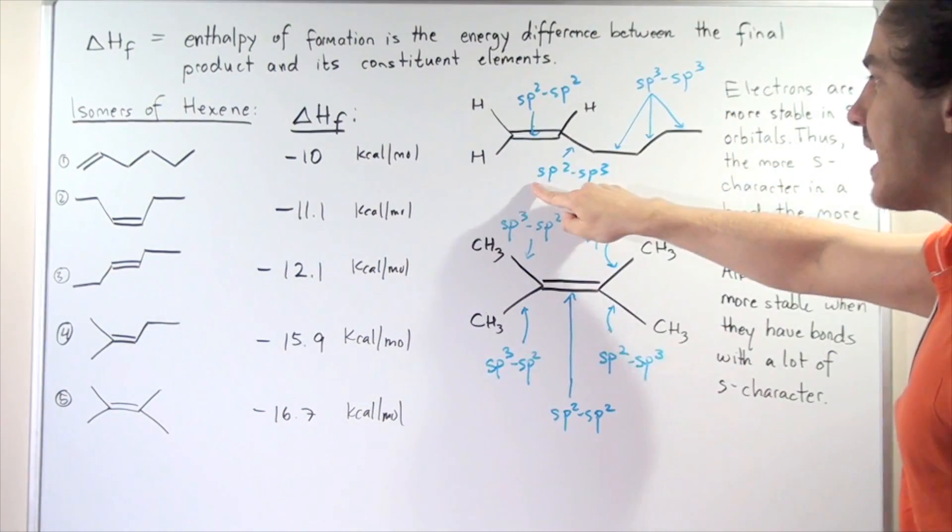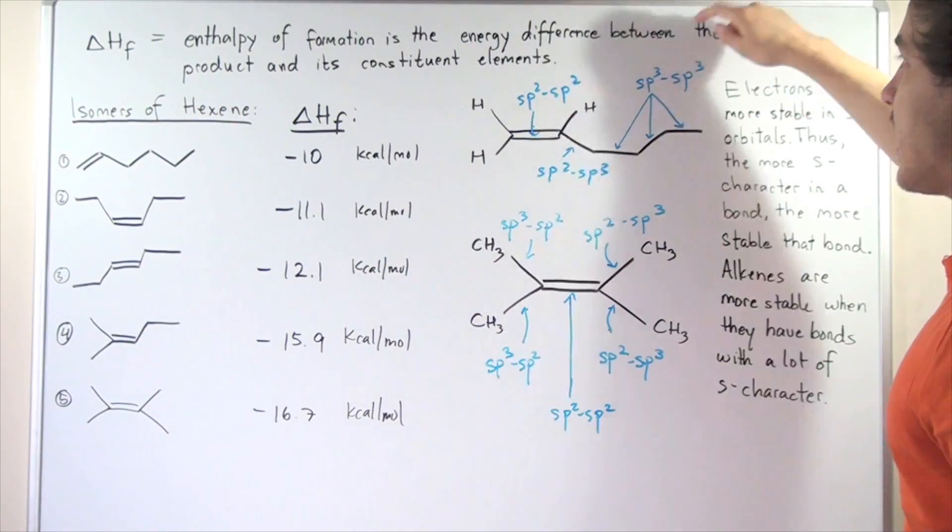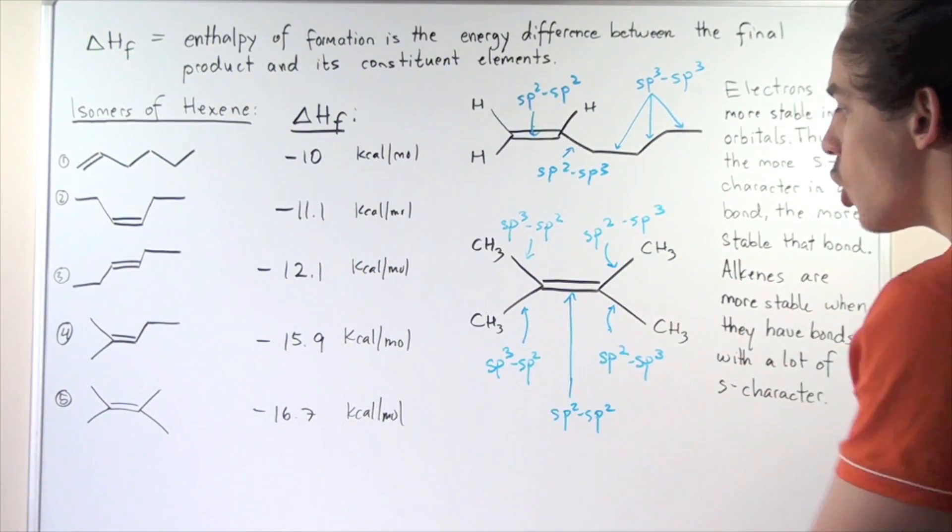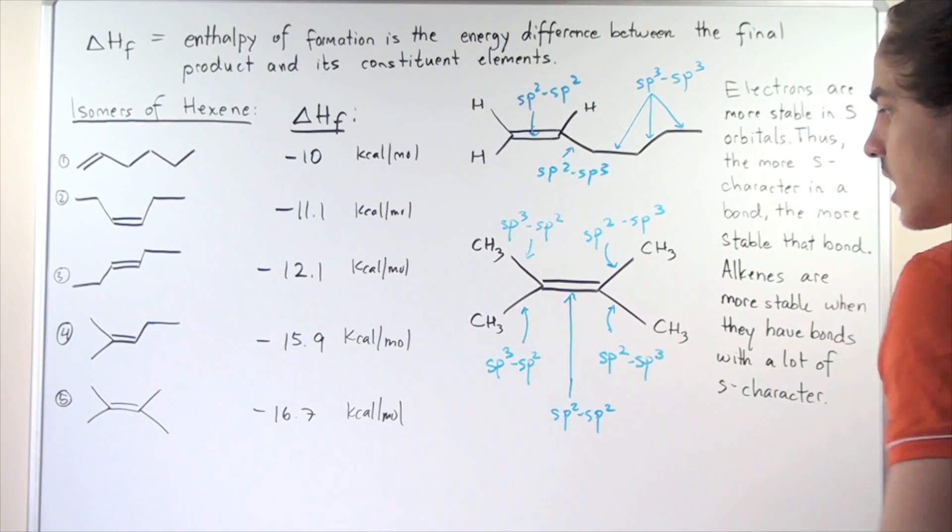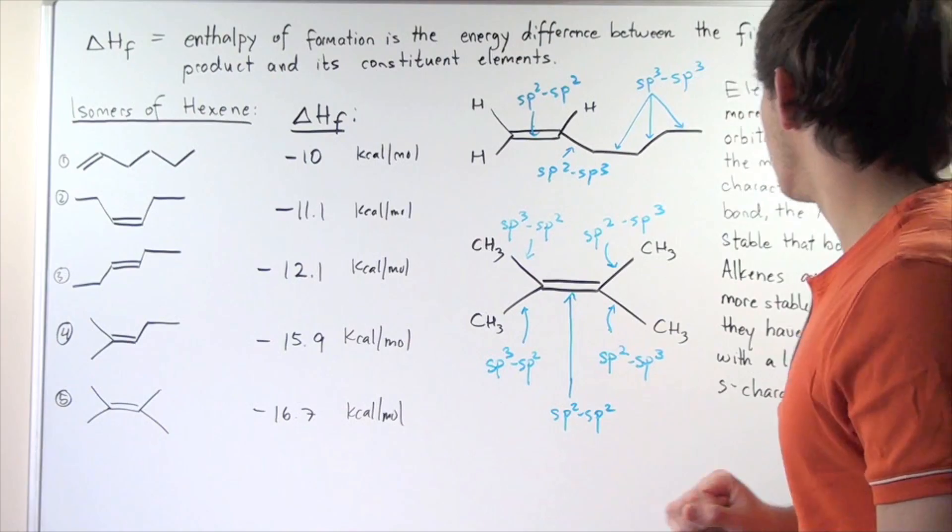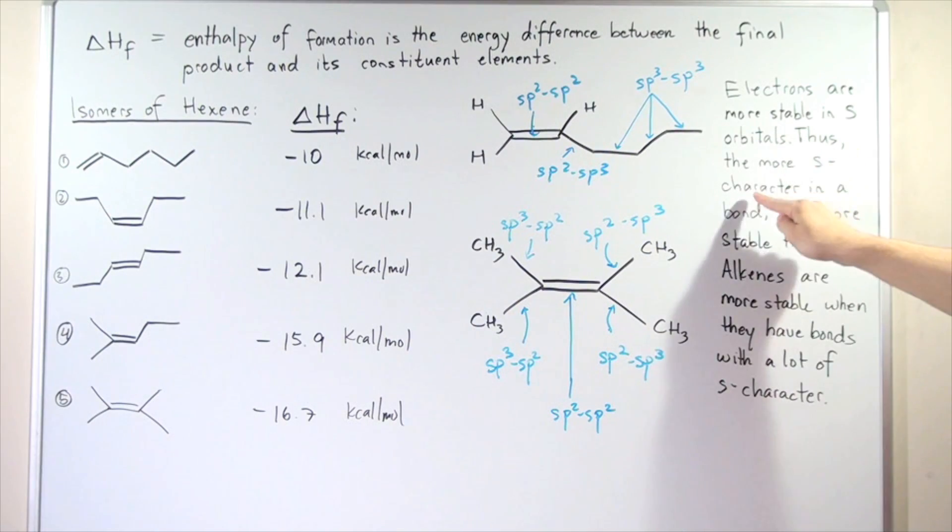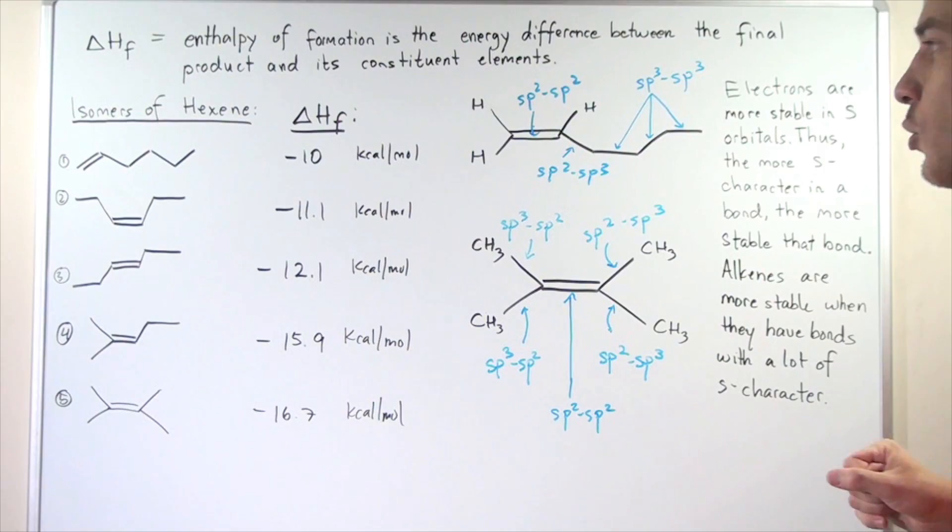Here we only have one sp2, sp3 bond and the rest are sp3, sp3s. While here, all four bonds are sp3, sp2 bonds. So in other words, electrons are more stable in the s orbitals. Thus, the more s character in a bond, the more stable that bond. And alkenes are more stable when they have bonds with a lot of s character.